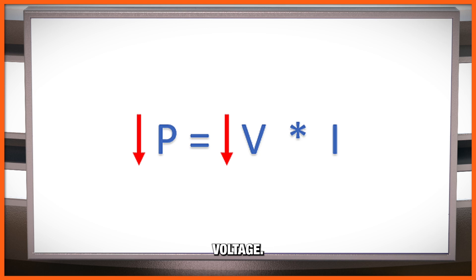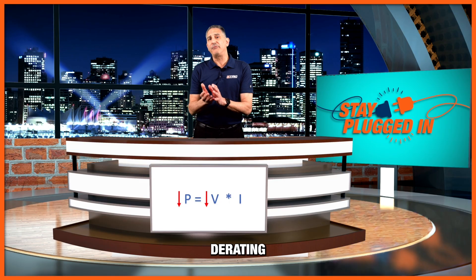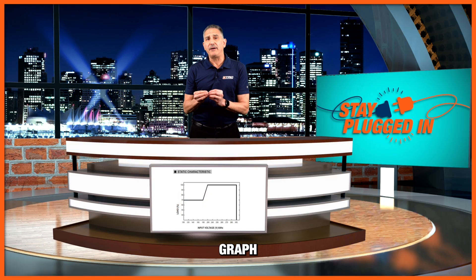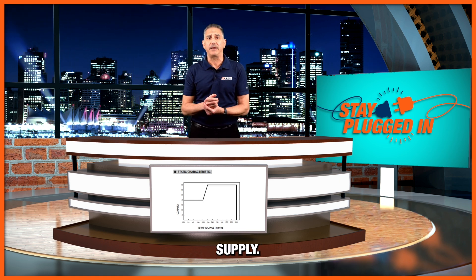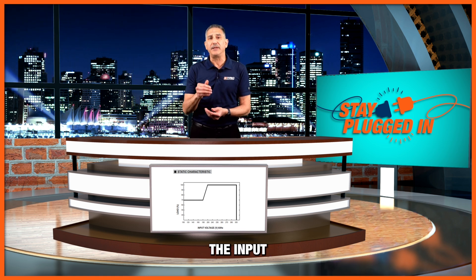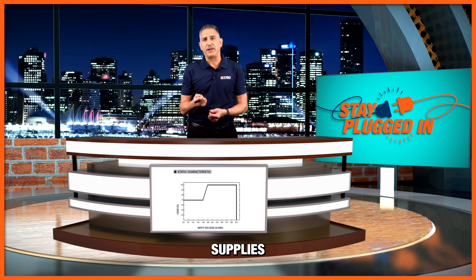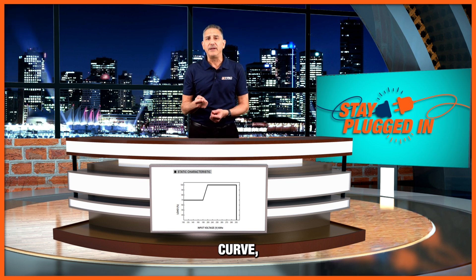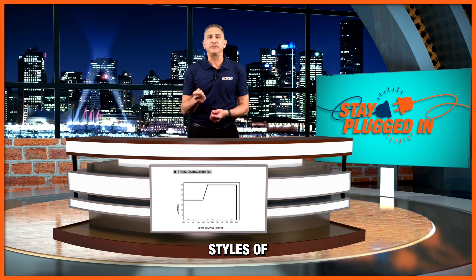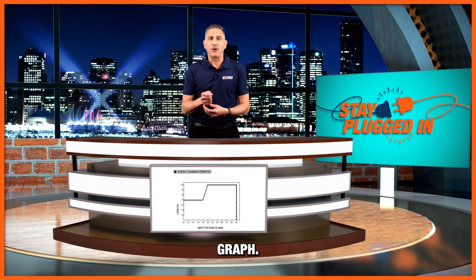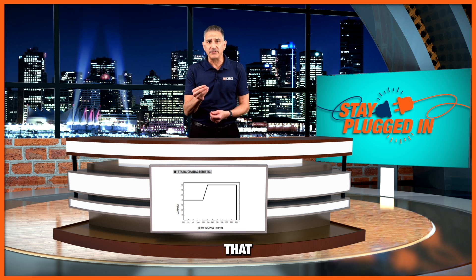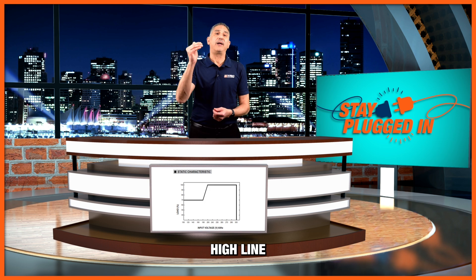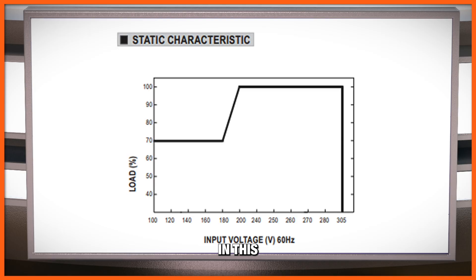An input derating curve is a graph that shows how you should reduce the maximum power output of your power supply depending on the input voltage. Many power supplies employ an input derating curve, and there are two common styles of this graph. One style has two distinct portions — flat portions that represent commonly used voltage ranges that we call high line and low line.